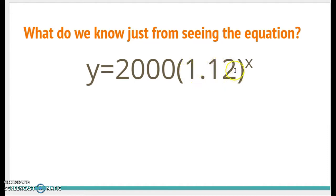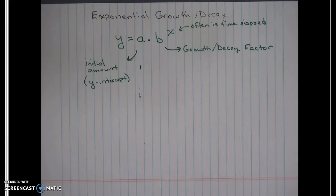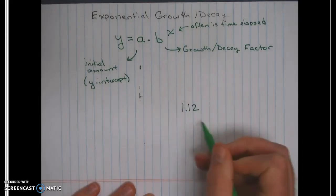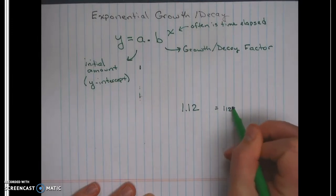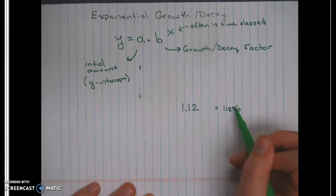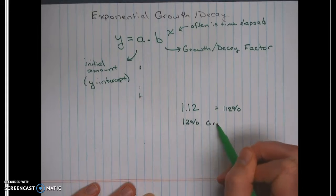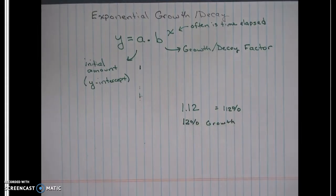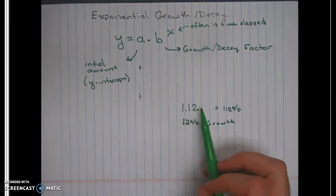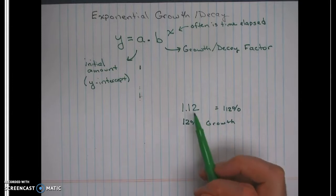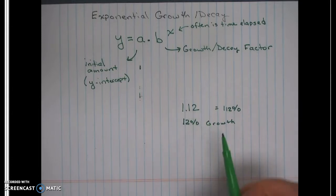So when you look at a function with 1.12, the 1 is like 100%, so 1.12 would be like 112%. How much above 100% are you? You're 12% above 100%, so 1.12 would be a 12% growth. Every time you're above 1.00, that tells you it's growing — so 1.12 is a 12% growth factor.